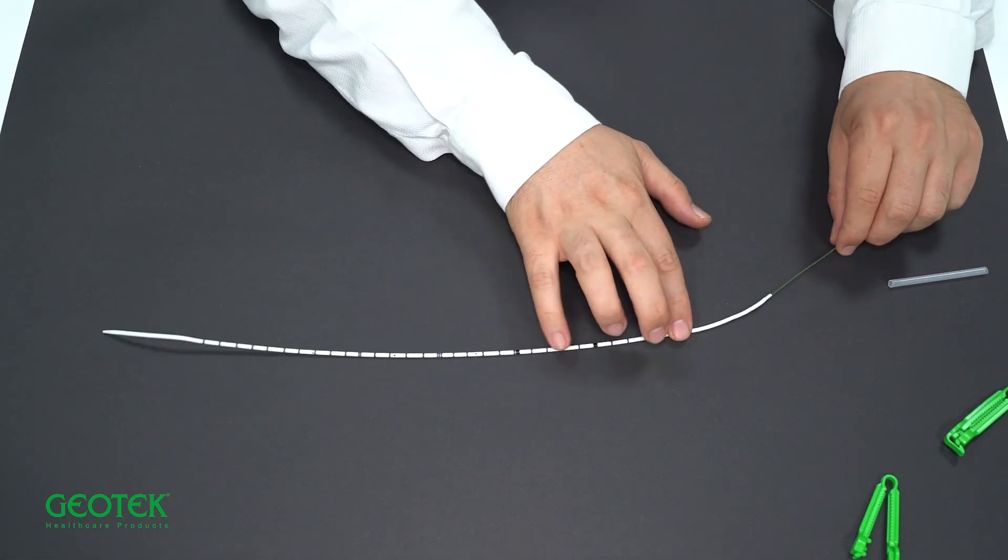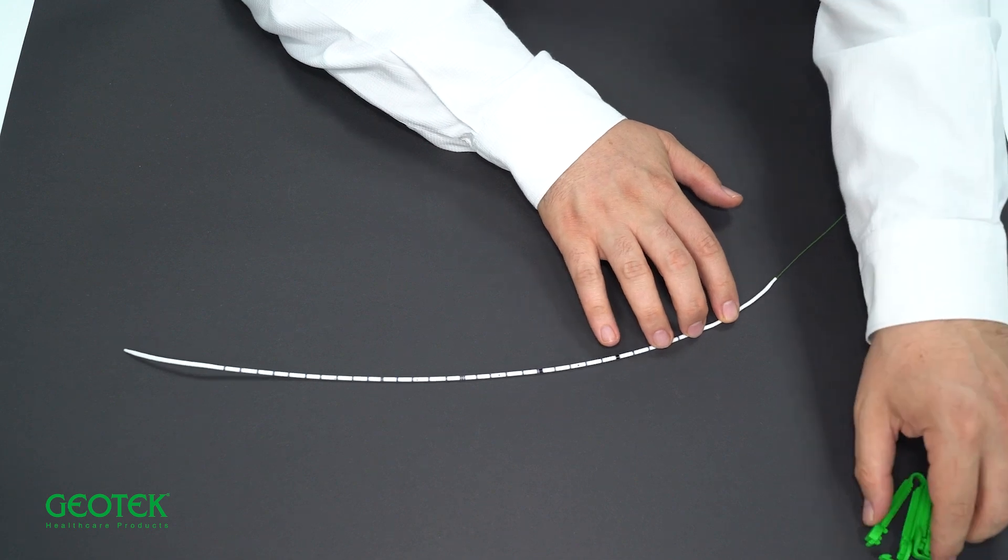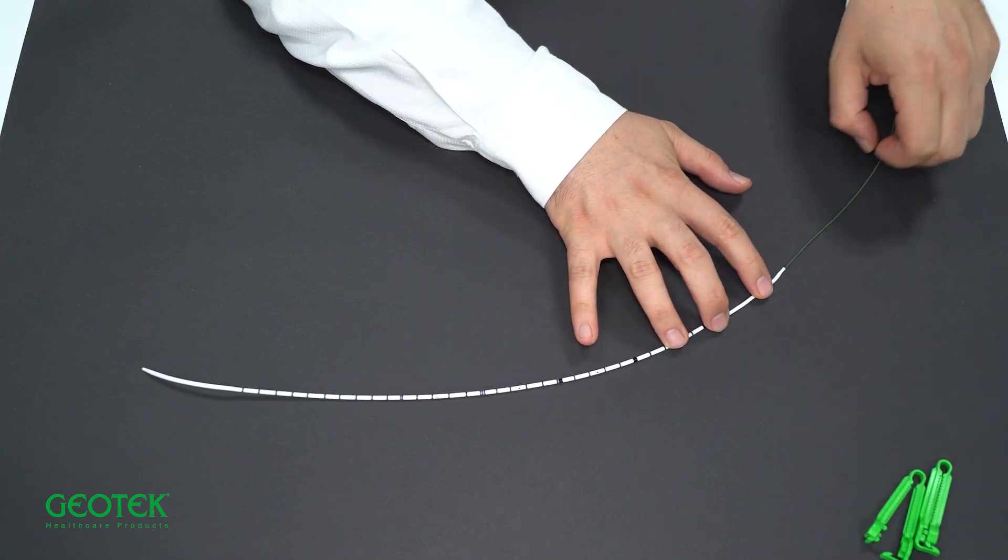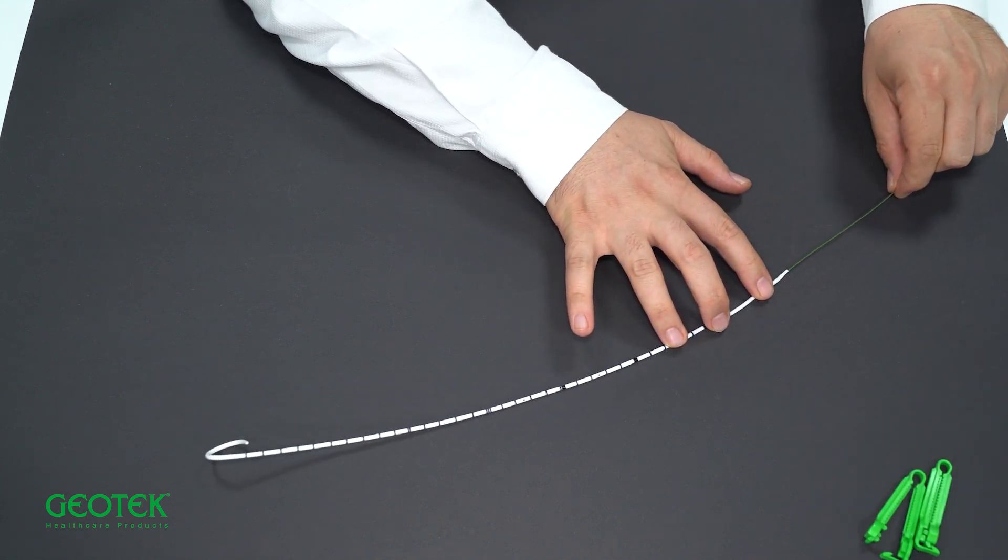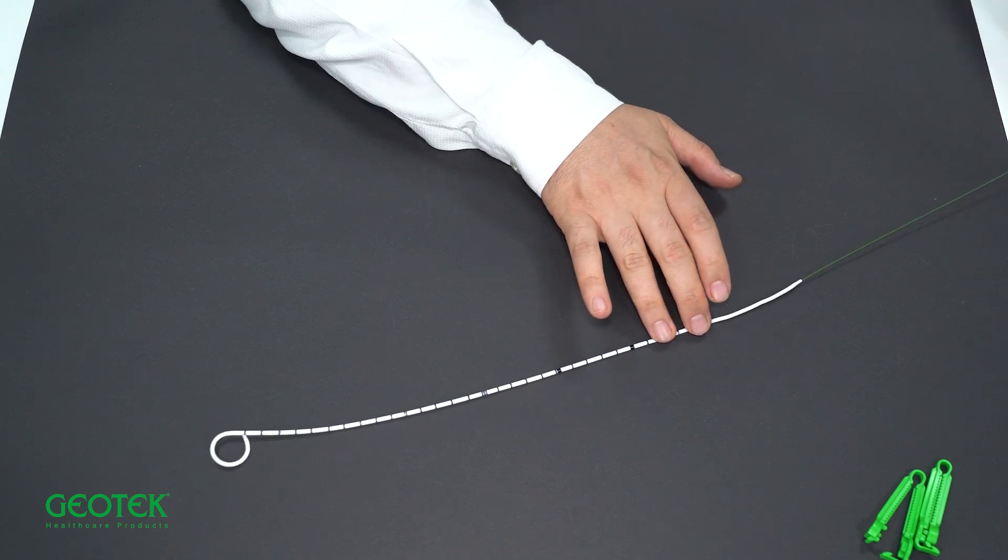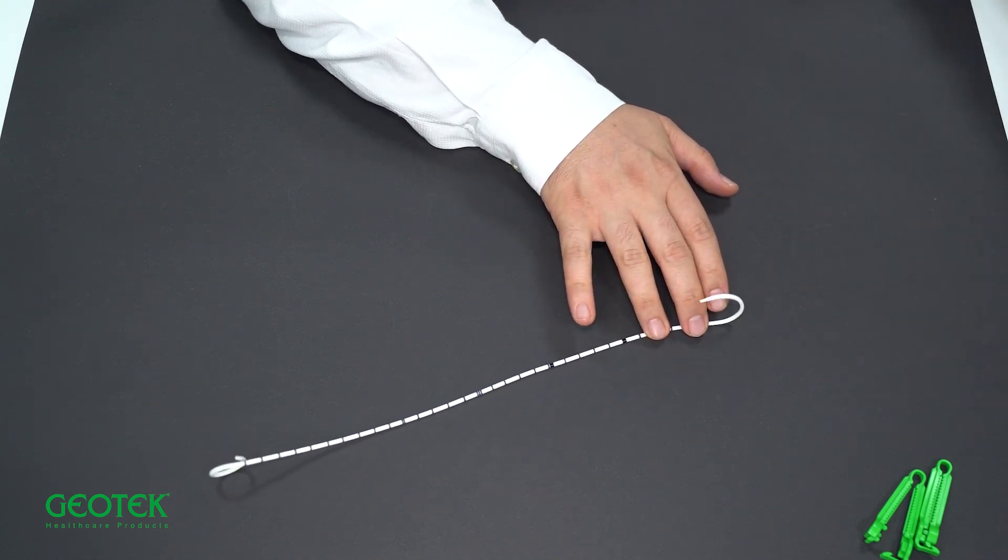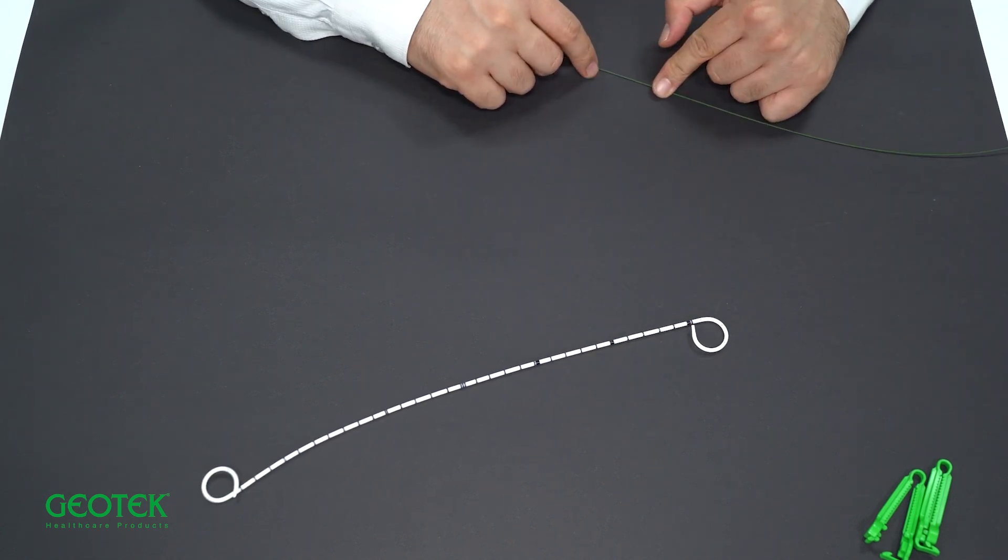When we successfully place our stent in the renal collecting system, as we see when we open the clip and pull the guidewire, it first bends in the kidney. Then, it bends in the bladder. The kidney tip and the bladder tip are thus positioned.